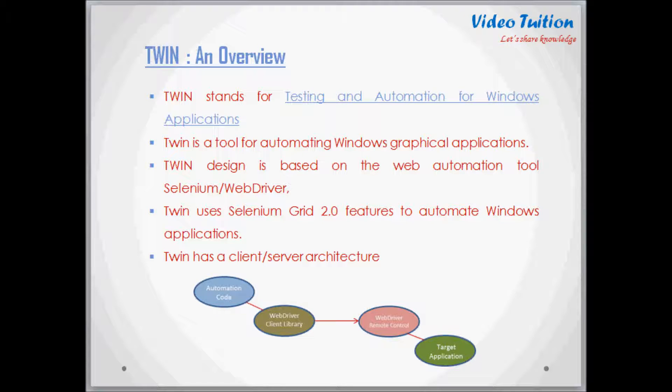TWIN supports client-server architecture. As shown in the diagram, you write automation code using the client library to perform tasks in an application. When your program runs, the client library connects to the remote control server and sends its commands. The server then launches the target application and performs the actual button clicking.